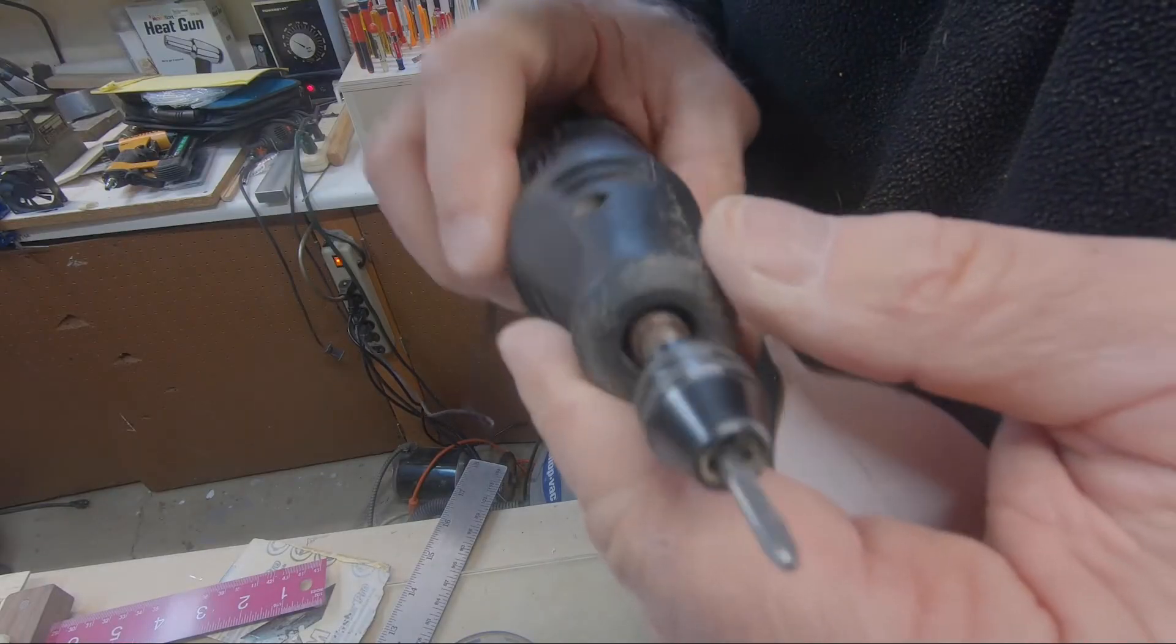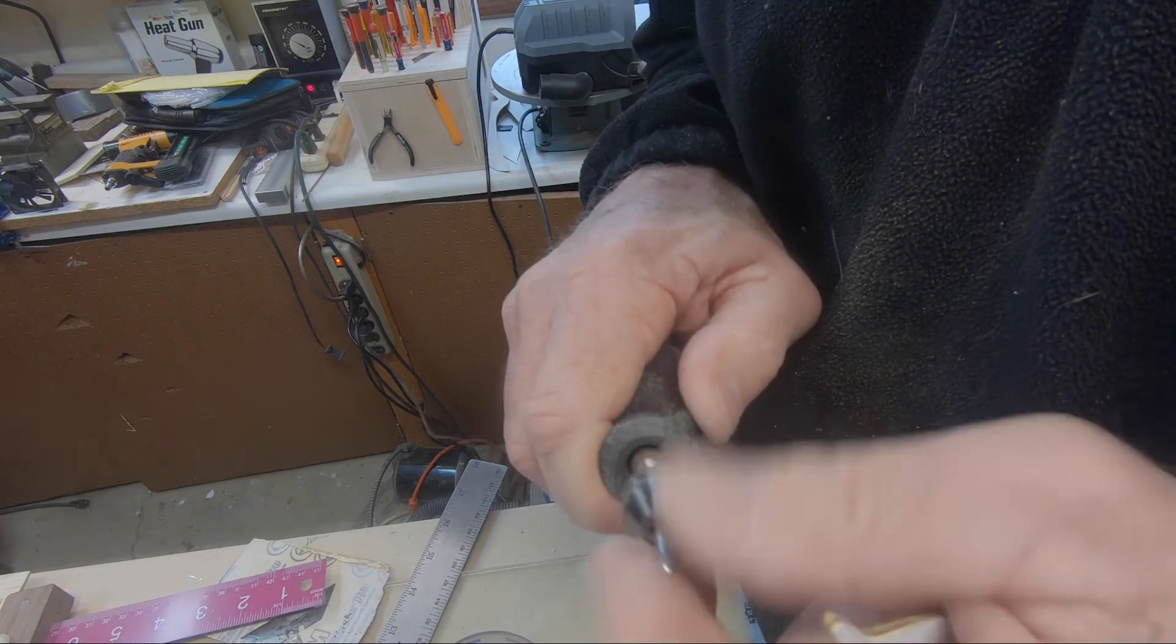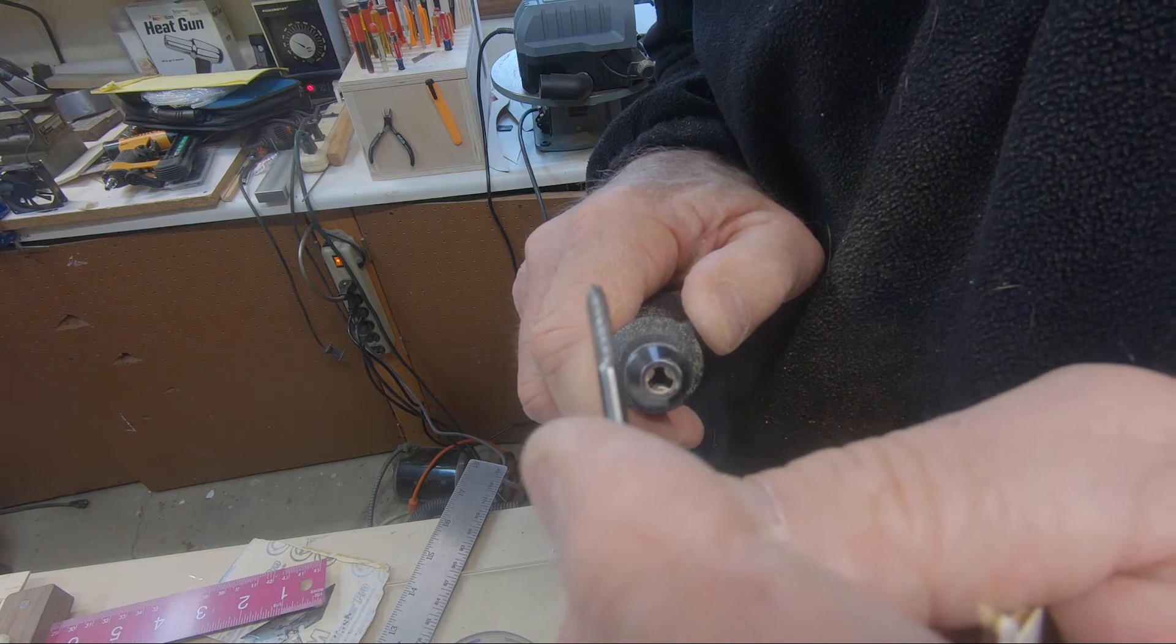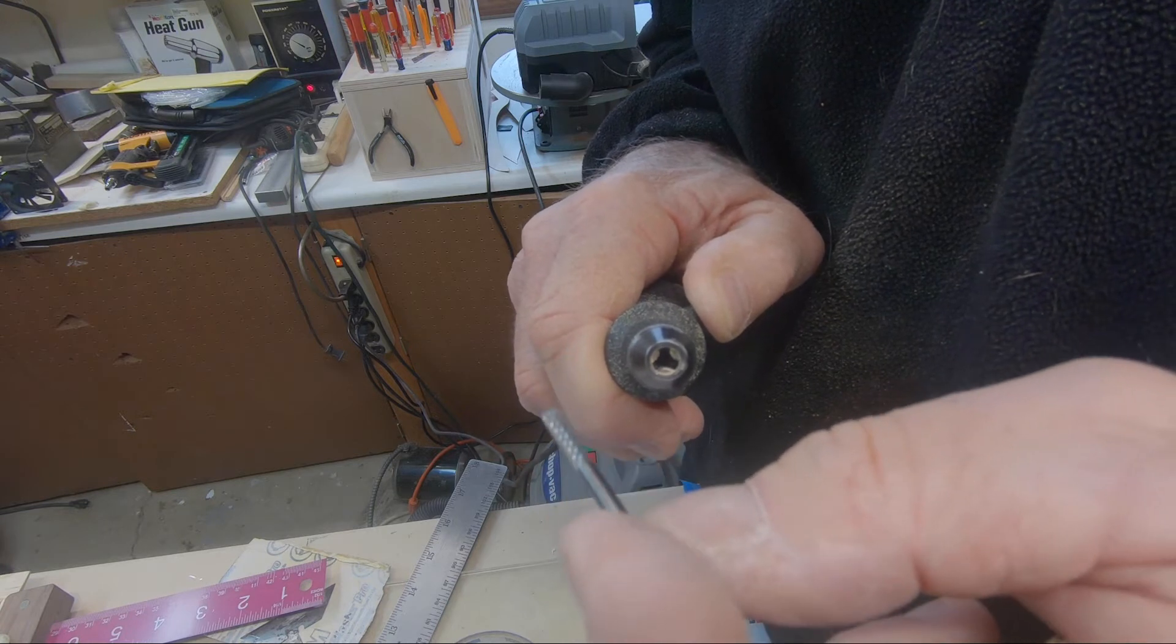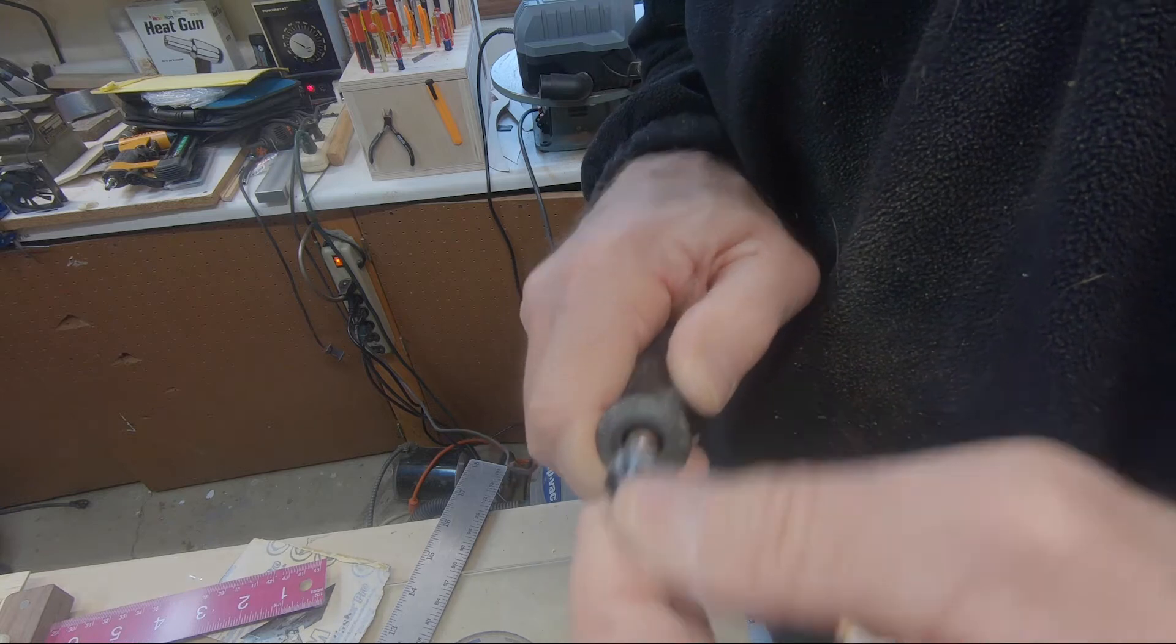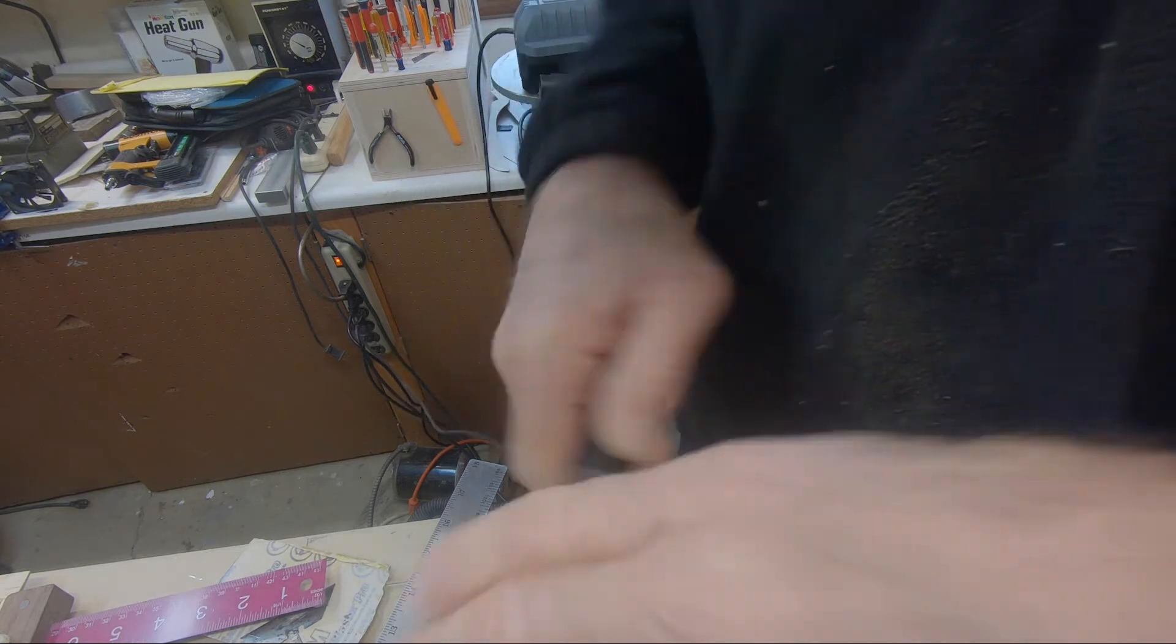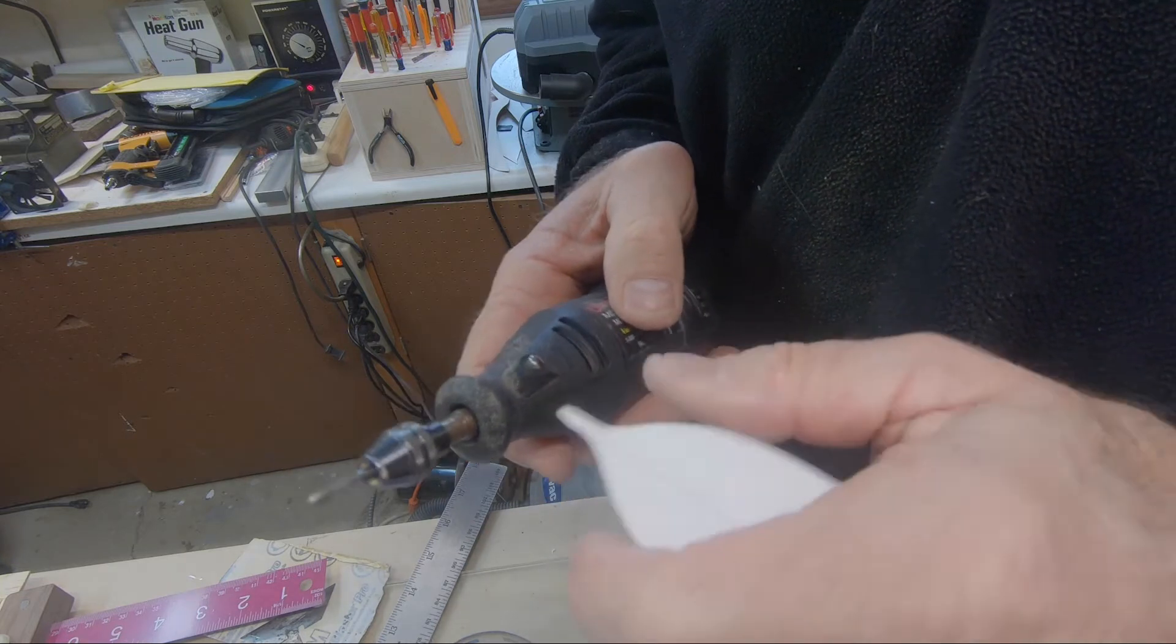So this is the bit that's worked out really well for me. This is a solid carbide with a spiral cut on it. I guess it would be an upcut. And what I use it for is to fine-tune templates and tight corners.